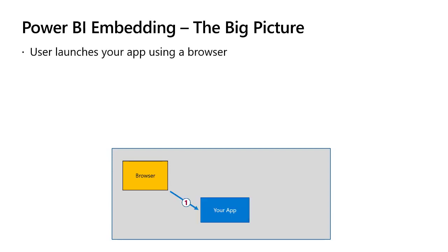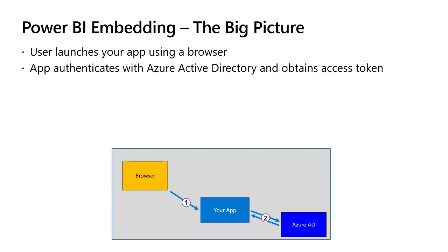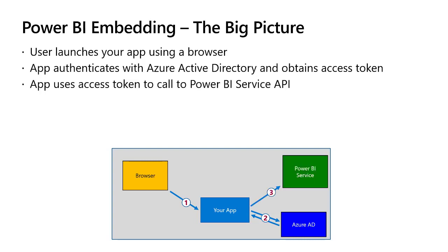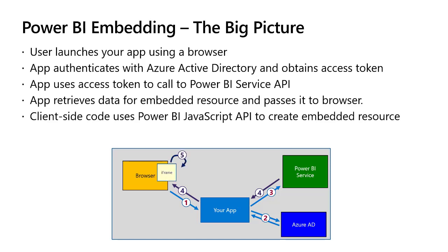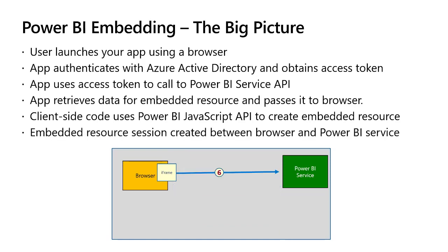You create a browser-based application and when the user launches your application you need to call to Azure AD and get an access token. The access token allows you to call to the Power BI service, which gives you back information about the object or resource you want to embed — like a report or dashboard. You then pass that embedding data and some type of security token to the browser, and the final piece uses a JavaScript or TypeScript client that leverages the Power BI JavaScript API to create an iframe and connect your embedded resource directly to the Power BI service.